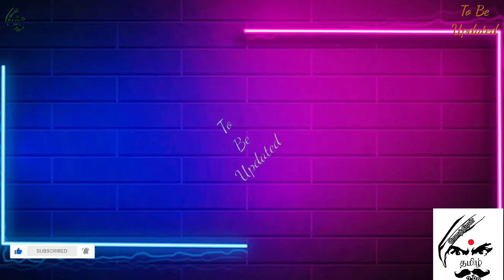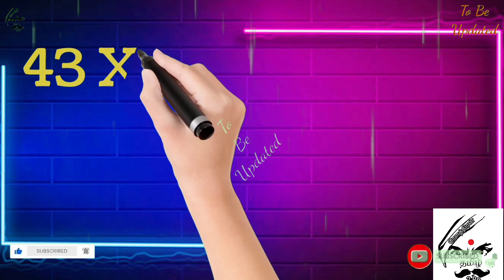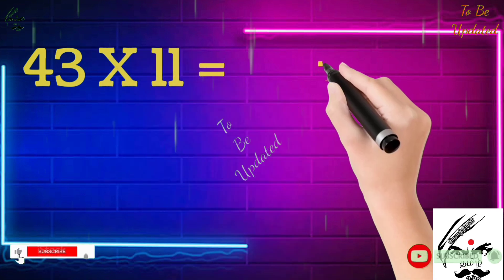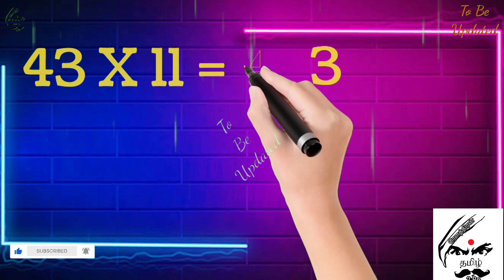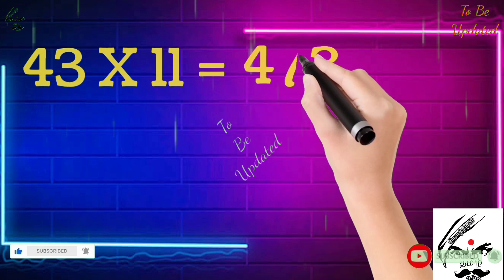43 times 11. See, the unit digit, write as it is: 3. The first digit also write: 4. Now we are going to add this 4 plus 3 equals 7. The 7 you are going to put in the middle of 4 and 3. That's all, answer is correct.